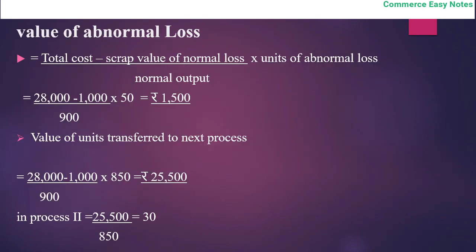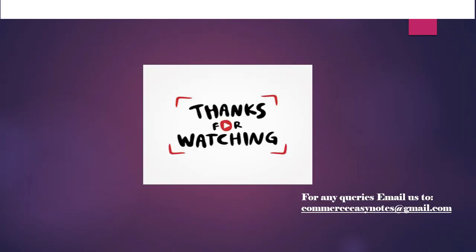The working note is very important. The formula — total cost minus scrap value of normal loss, divided by normal output — gives the per unit amount, which is then multiplied by units of abnormal loss for the abnormal loss value, and by actual output for the next process transfer value. This is how normal loss and abnormal loss accounts are prepared. Thank you for watching.